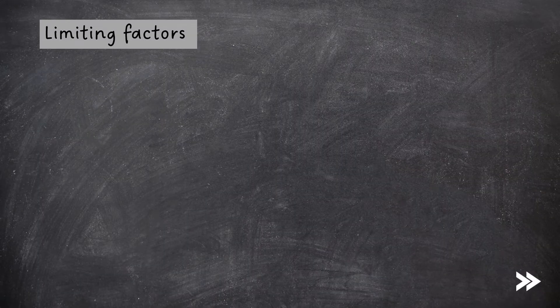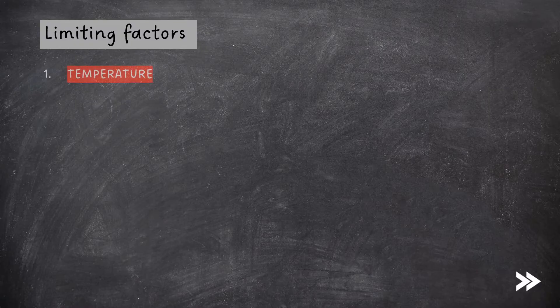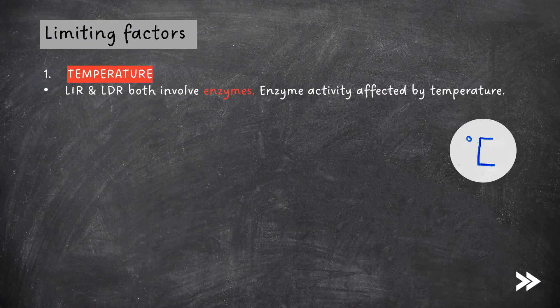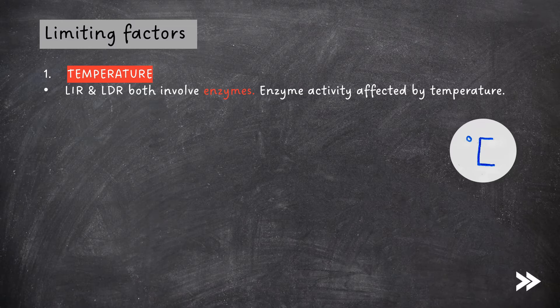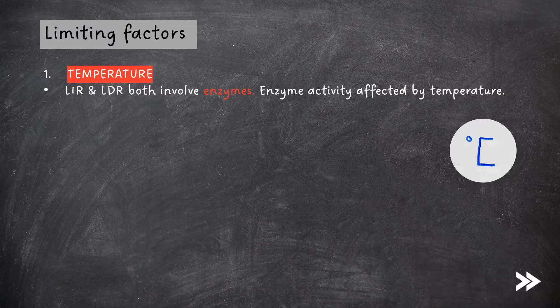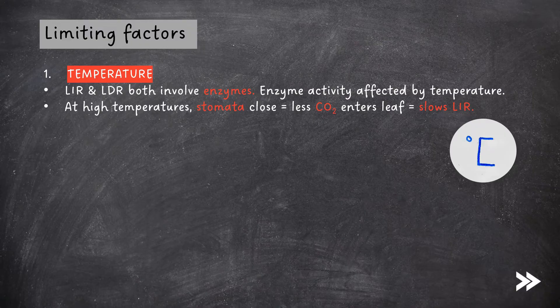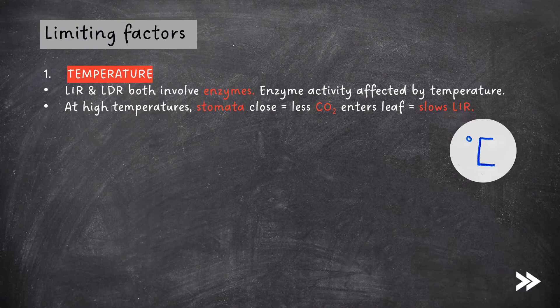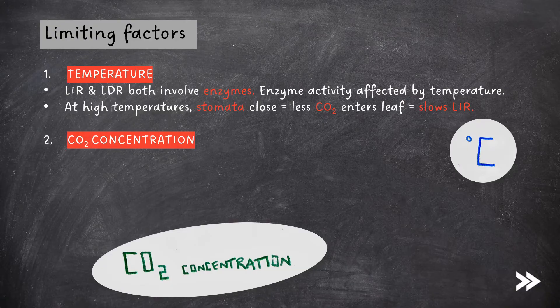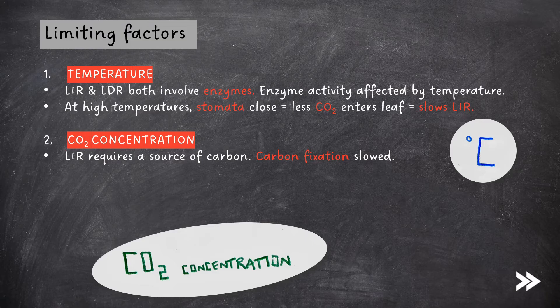Finally, let us consider factors that limit the rate of photosynthesis. First of all we have temperature. The light dependent and light independent reactions both involve enzymes. As we already know from previous parts of the specification, enzyme activity is greatly affected by temperature. To watch my video on enzymes and factors affecting enzyme activity just follow the link top right. Also at high temperatures the stomata close meaning that less CO2 can enter the leaf which slows the light independent reaction. Next we also have CO2 concentration as a factor that limits the rate of photosynthesis. The light independent reaction requires a source of carbon. At low CO2 concentrations carbon fixation is therefore slowed.